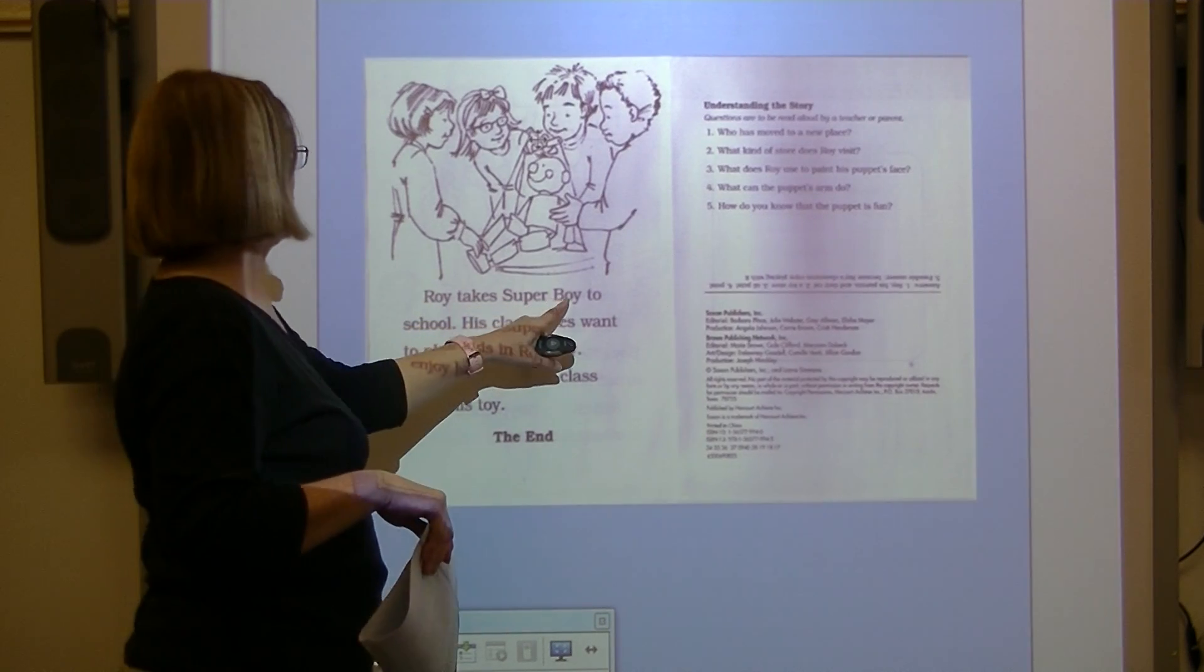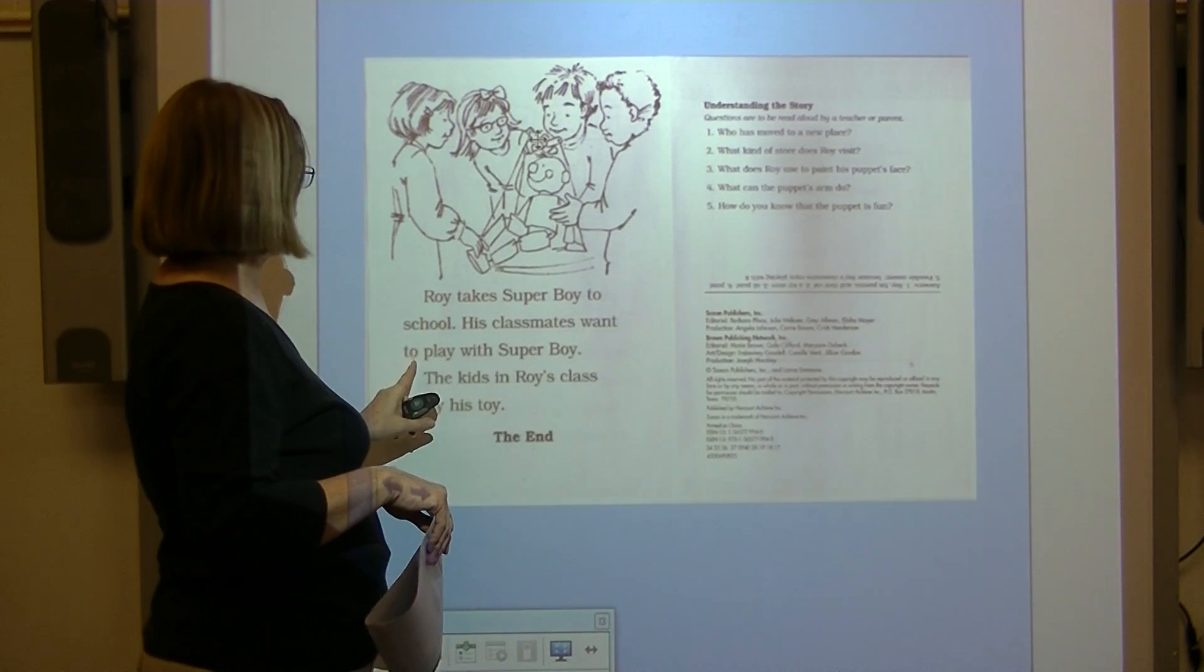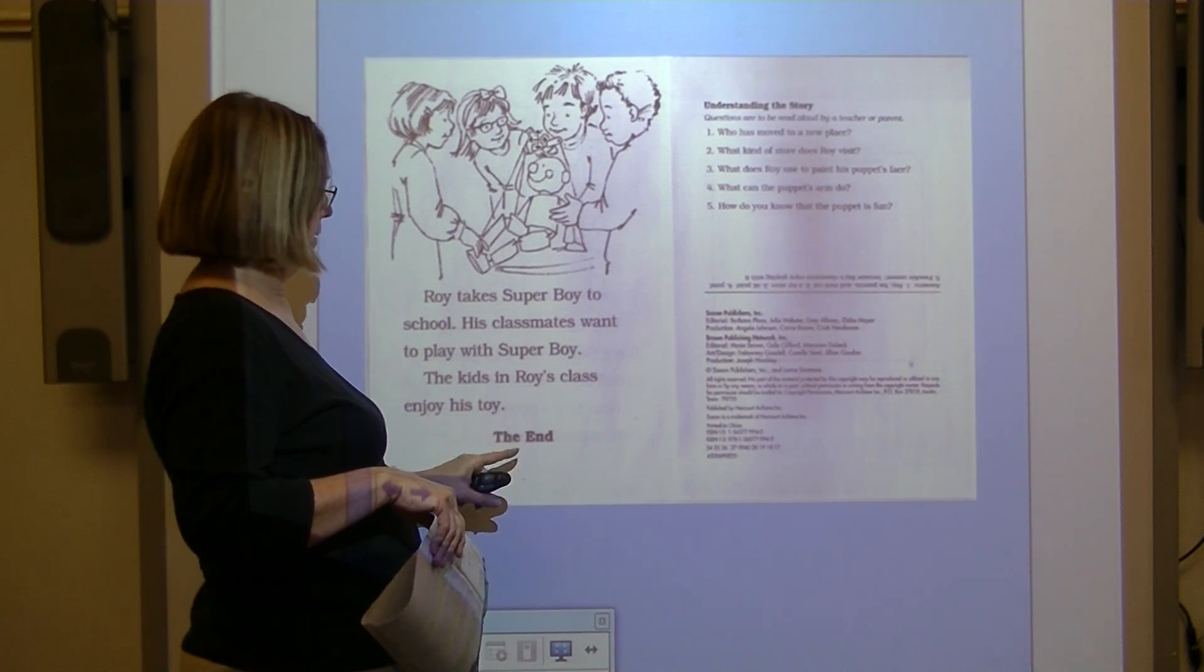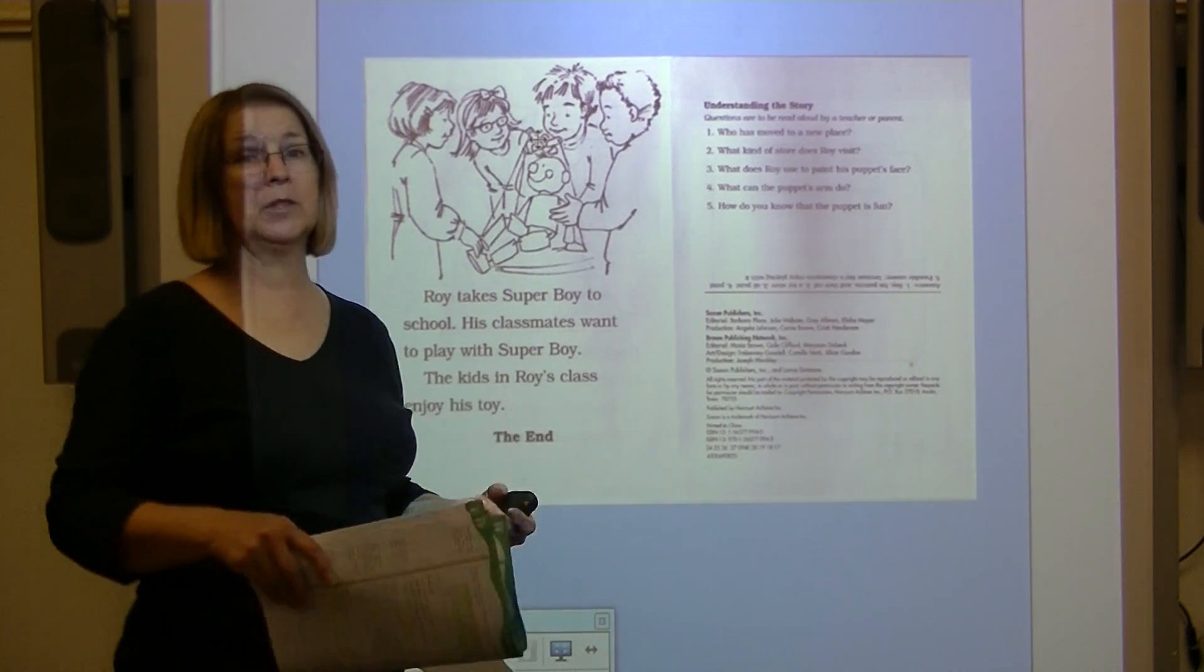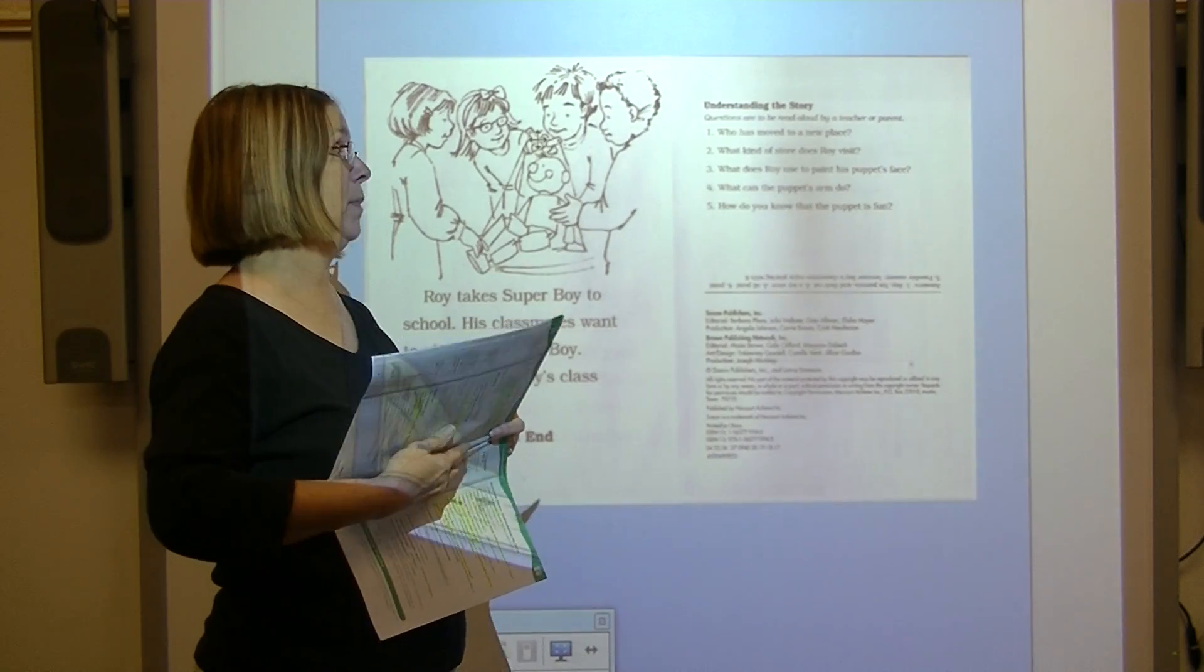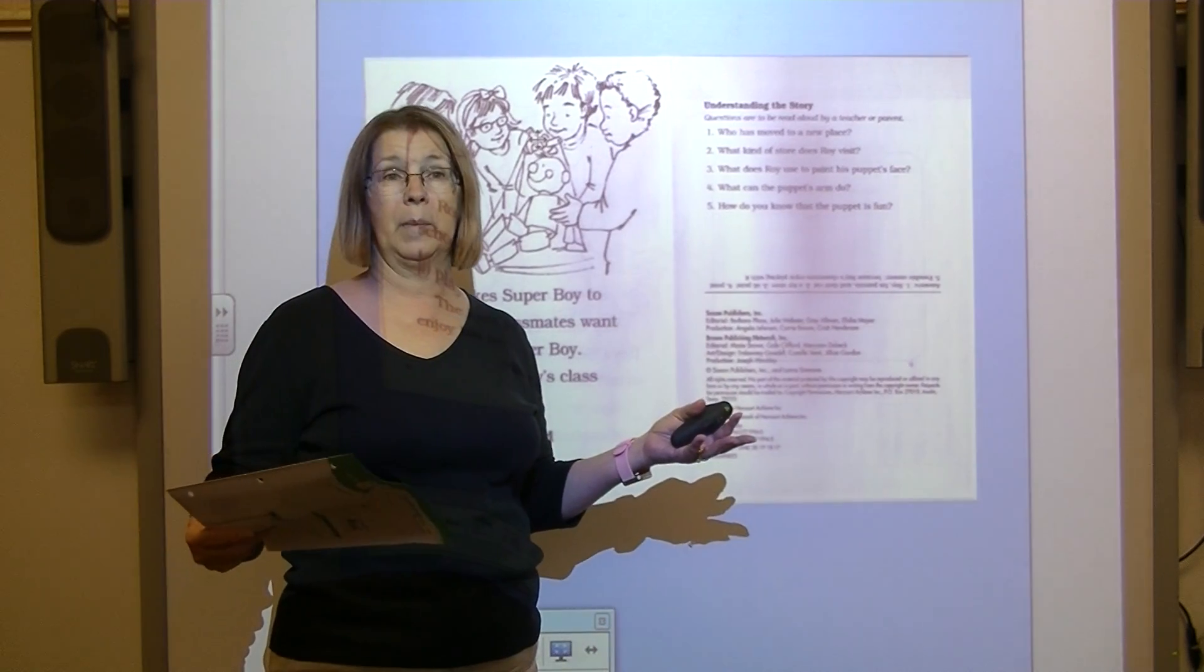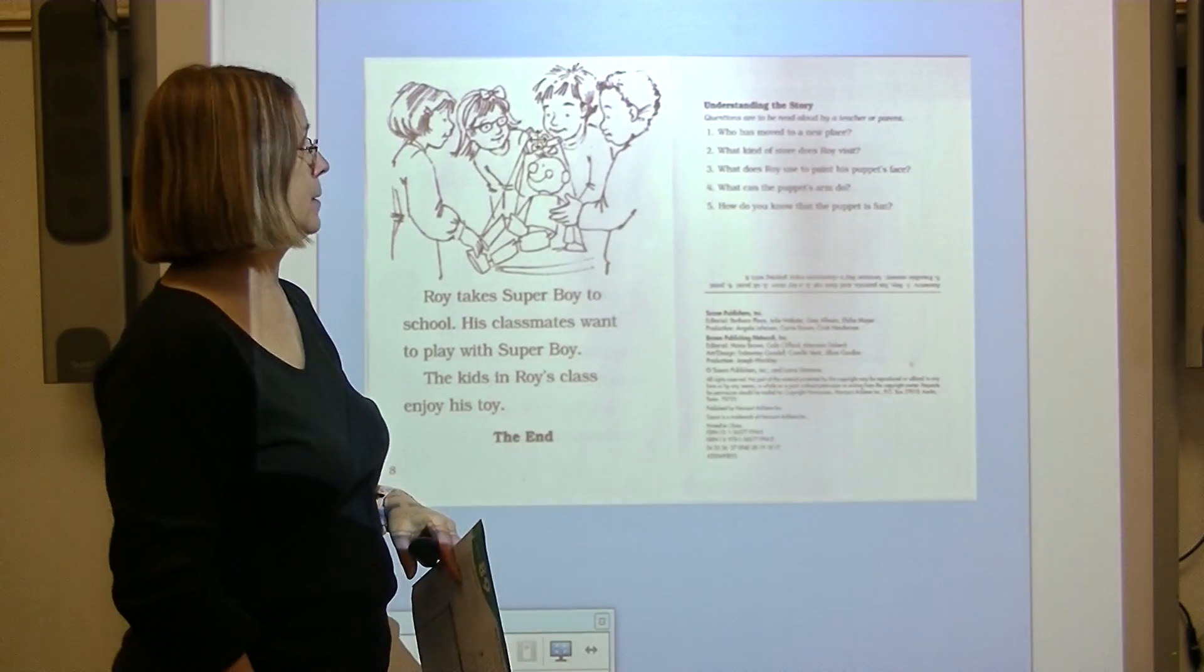Roy takes Superboy to school. His classmates want to play with Superboy. The kids in Roy's class enjoy his toy. The end. You know what? I bet that was a good way for him to make friends because he carried something to school that the other children may not have seen before. And so they were interested in it. And so that was something for them to talk about. And then they got to know each other. And they could become friends.